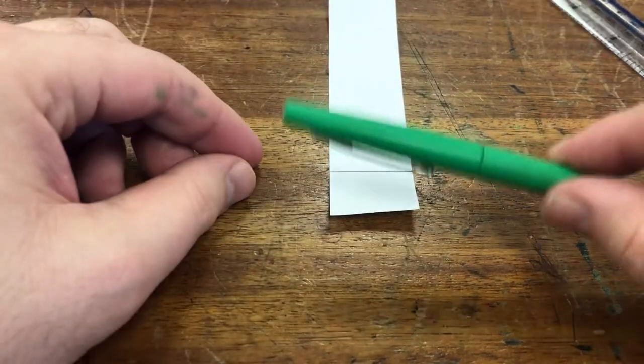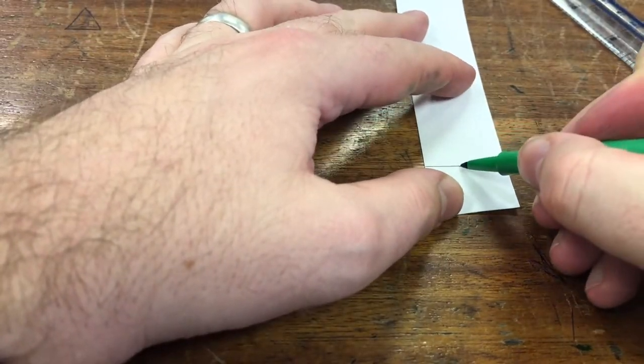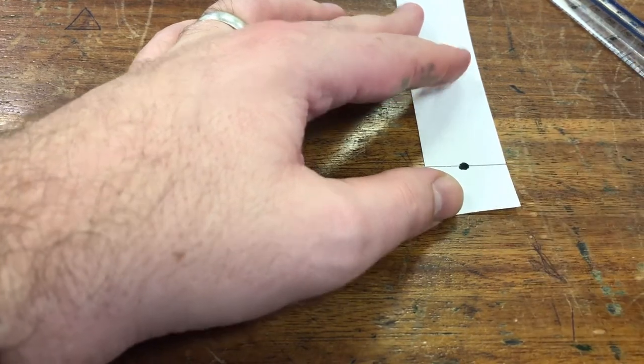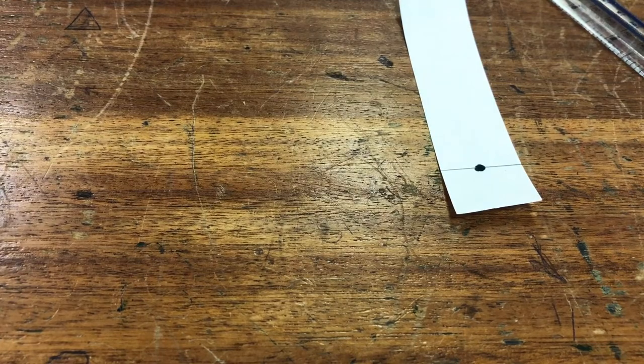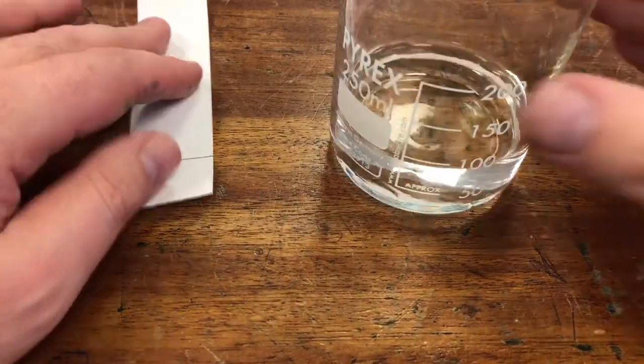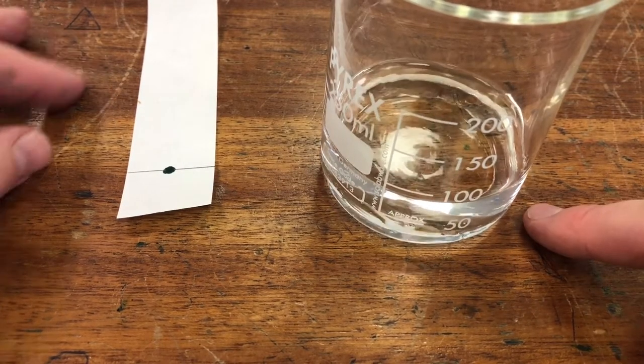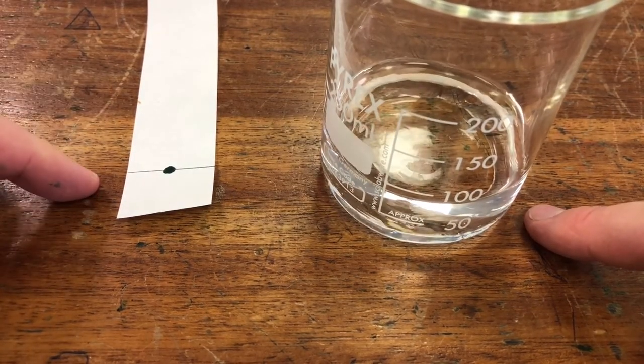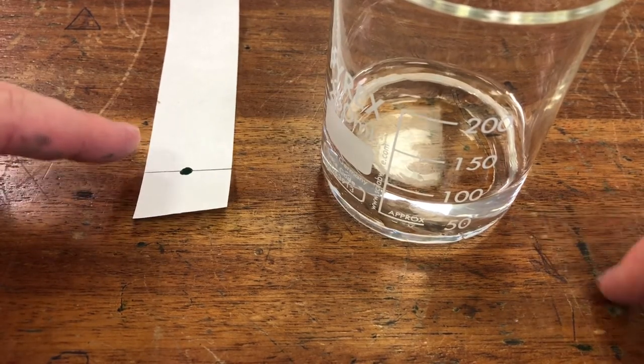I then need to get my ink and I'm going to put a spot of ink in the middle of that pencil line. And now I need a solvent. I need something that the ink will dissolve in. In this case, water will work. The solvent that you use depends on the mixture that you're trying to separate, but I know that this ink is water soluble, so water is a good solvent to use.